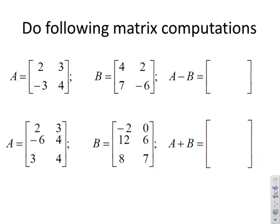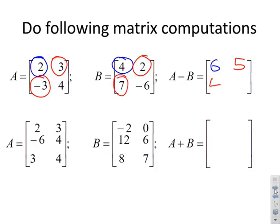Let's do the top one first. I've got to add A and B. If I take the 1,1 position, there's a 2 and a 4, that gives 6. The 1,2 position, 3 and 2, gives 5. The 2,1 position, -3 and 7, gives 4. In the 2,2 position, 4 and -6 gives -2.